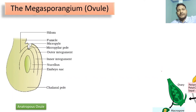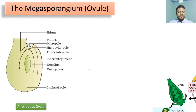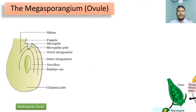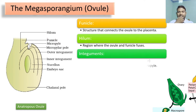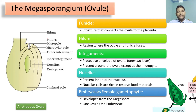The megasporangia structure shown here is from the NCERT textbook — it is the structure of an anatropous ovule. There are different types of ovules such as anatropous and orthotropous; around five to six types exist, but we focus on this one per the CBSE syllabus. There is a funicle which helps in connecting the entire ovule with the placenta.